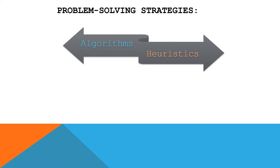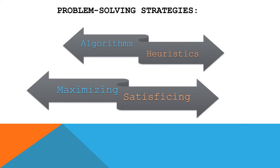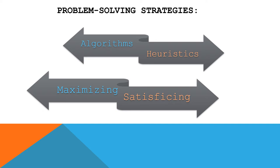We're going to talk about the pluses and minuses of these as we progress. I also want to note that this particular problem is just one type of problem that researchers look at. Other problems are more open-ended, with potential outcomes going in many different directions. When we look at how people solve those, algorithms and heuristics are still a component. But there's another split to identify: the difference between maximizing and satisficing.